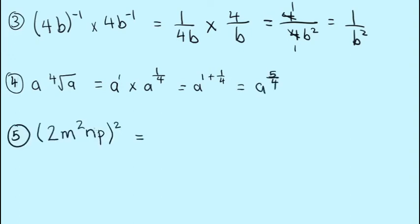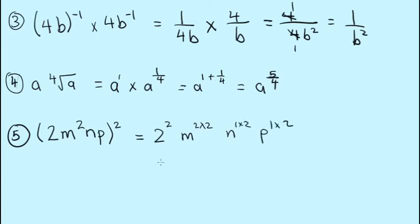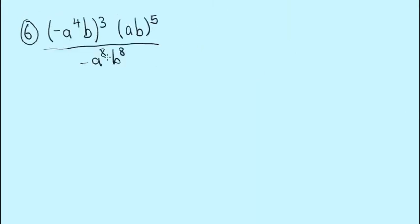The fifth example: everything in the bracket is raised to the power of two. We get 2 squared equals 4, m to the two times two equals m to the fourth, n to the one times two equals n squared, and p to the one times two equals p squared. The result is 4m to the fourth power times n squared times p squared.